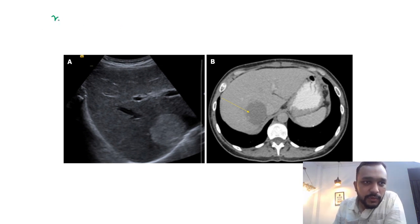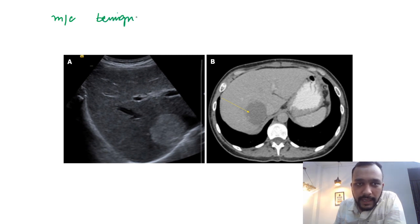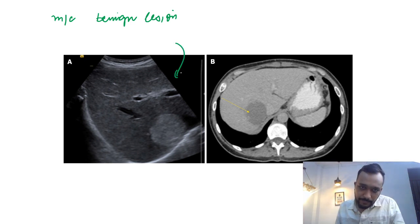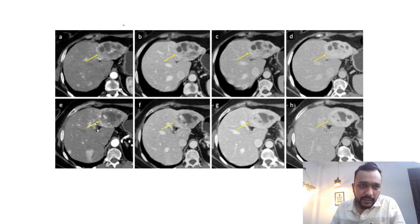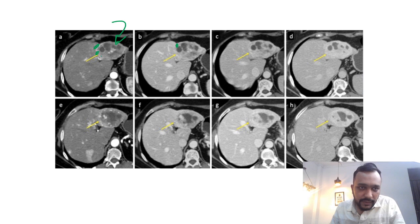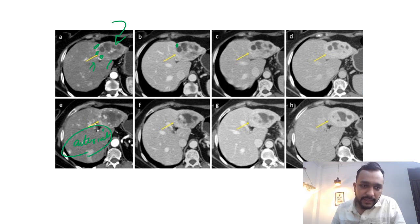The first lesion I am going to talk about is the most common benign lesion of the liver. This lesion appears hyperechoic on USG, and if we look at the triple phase CT abdomen images, we will see that this lesion will show peripheral nodular enhancement in the arterial phase.